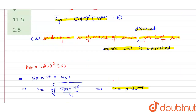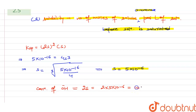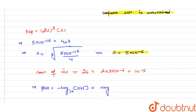Now we find the concentration of OH⁻, which equals 2s = 2 × 5 × 10⁻⁶ = 10⁻⁵. We know that pOH is defined as minus log of the OH⁻ concentration. Since [OH⁻] = 10⁻⁵, the pOH equals 5.